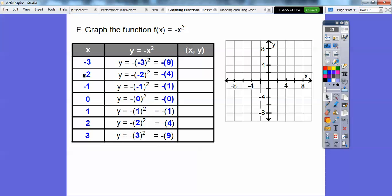We get the ordered pairs negative 3, negative 9, negative 2, negative 4, and so on. When we go to the left 3, it's negative 9, so it's going to be down here. It gives us those points and then we connect them up. It's a reflection of the other one that was positive x squared. This is another parabola. This negative just says it's opening down.